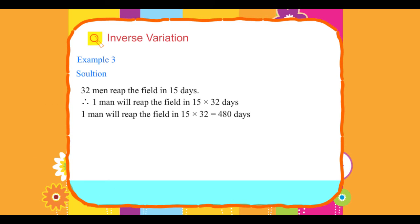One man will reap the field in 15 into 32 equals 480 days. Therefore, 20 men will reap the field in 480 upon 20 equals 24 days. Twenty men will reap the field in 24 days.